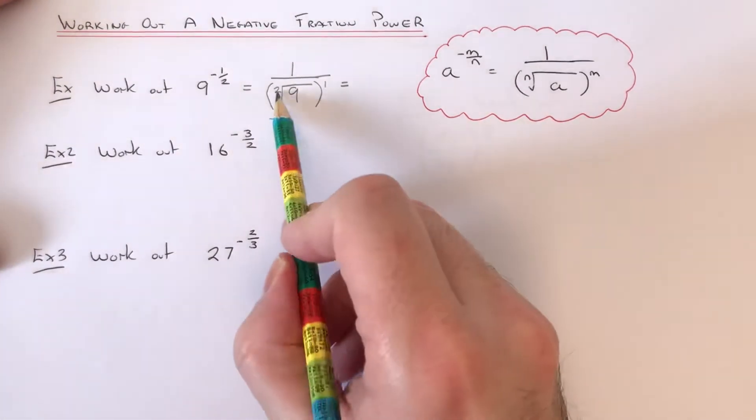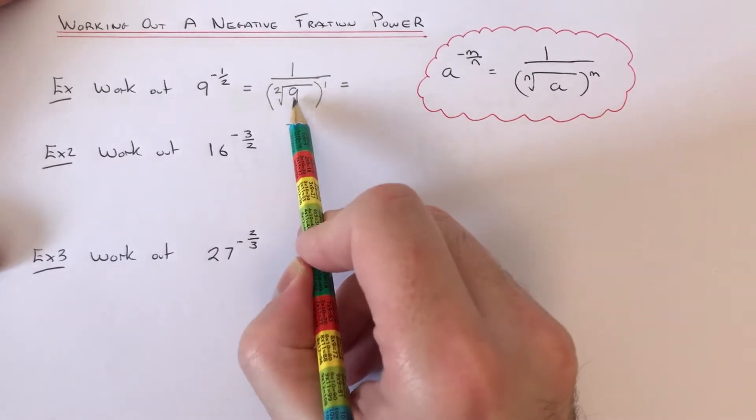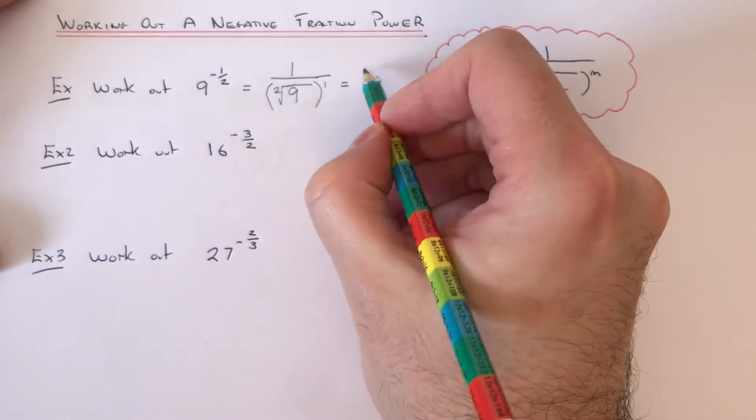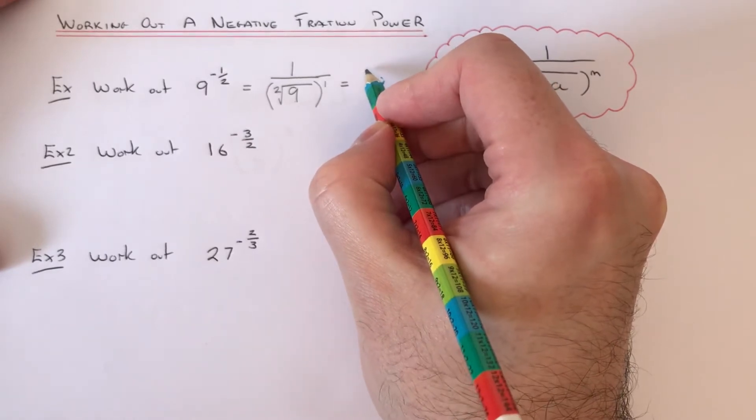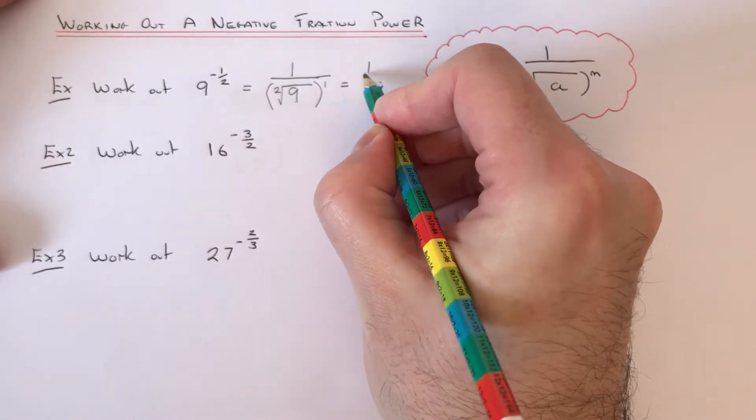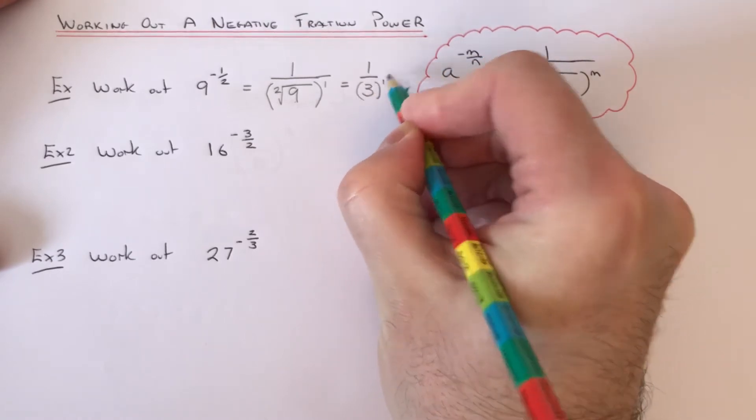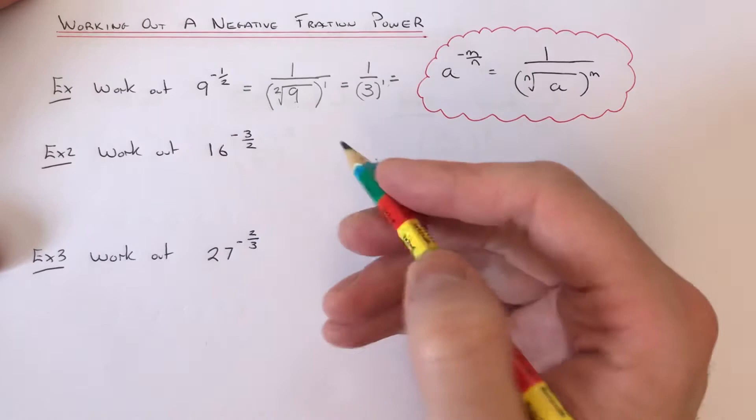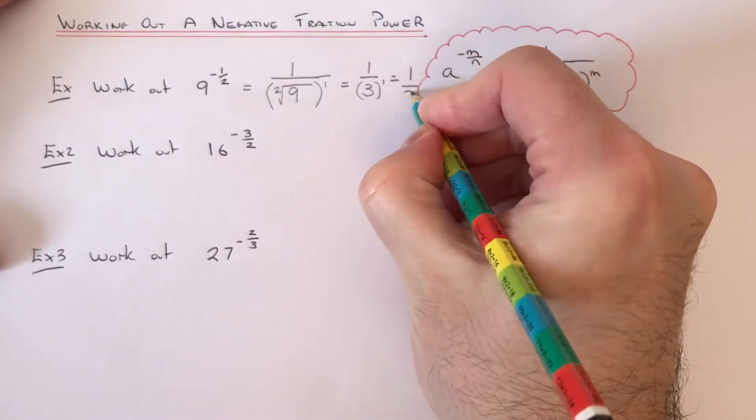So we just need to simplify this a little bit. Since we've got the little 2 on the root, this means the square root of 9. So the square root of 9 is 3 because 3 times 3 is 9. This means we have 1 over 3 to the power of 1, and then 3 to the power 1 is just 3, so we end up with the answer 1/3.